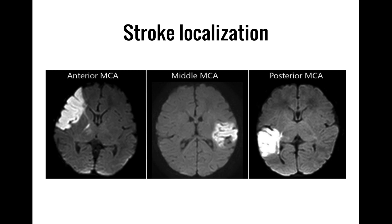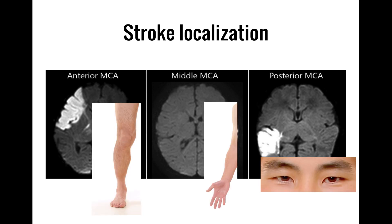Welcome back. In this video, we'll be going over stroke localization, which is the process of figuring out where in the brain a stroke has occurred based purely on the patient's signs and symptoms. I don't think I can overstate exactly how much neurologists love stroke localization, though I can actually kind of see the appeal. There's a certain order and logic to the process that's like a medical version of brain teasers. Because specific arteries supply specific parts of the brain, the signs and symptoms of a stroke are largely dependent upon which areas have been damaged. This is the basis of stroke localization.